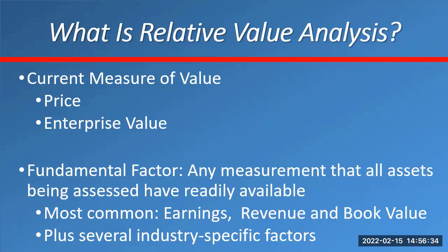For your company, I gave you two or three related to earnings, one related to revenue, one related to book value. So price to earnings, price to book value — those are probably the two most common ones. Enterprise value to revenue — we'll talk about those. Relative value analysis, unlike fundamental analysis, you're trying to figure out how much the company is worth.